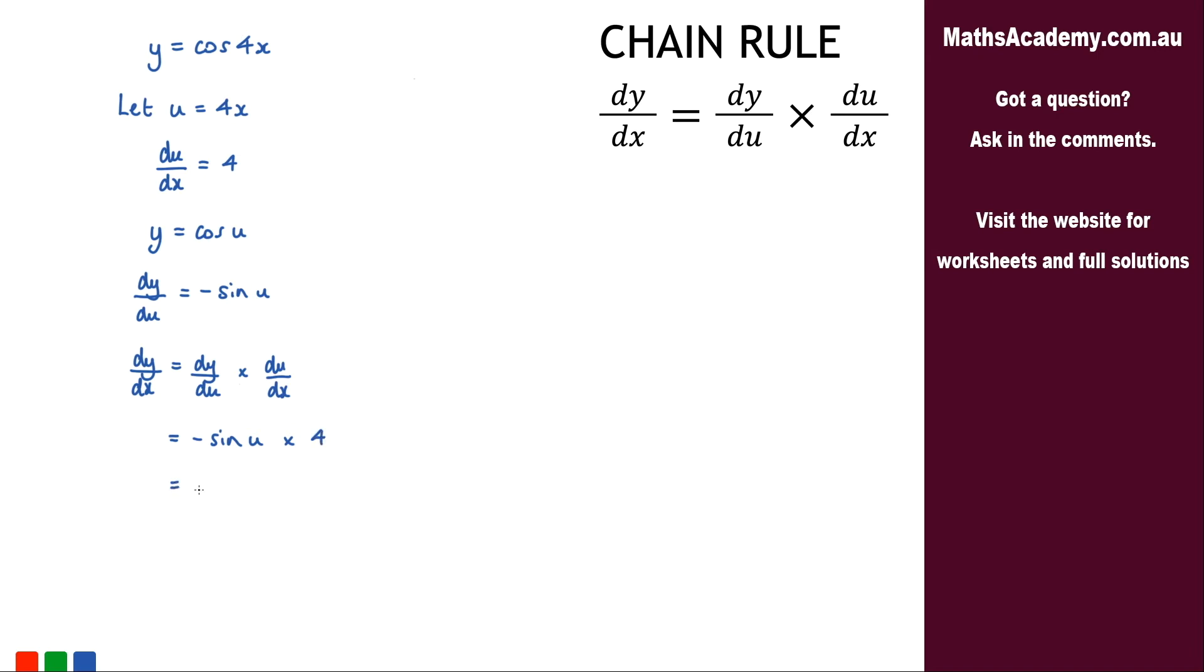Simplifying a little bit, we'll get negative 4 sine of u. And we know that u is equal to 4x, so let's substitute that back in. So we've got dy by dx is equal to negative 4 sine of 4x.